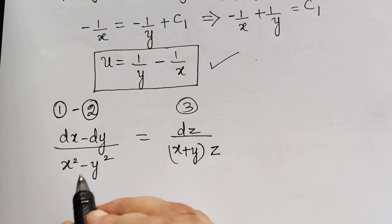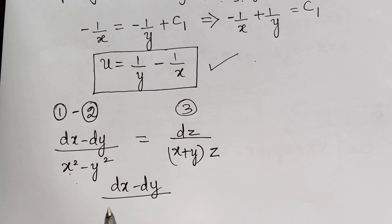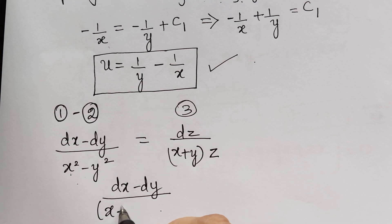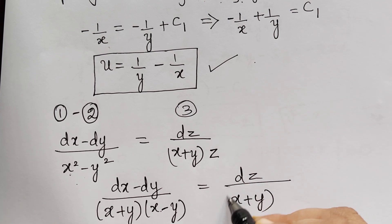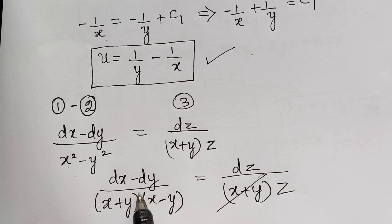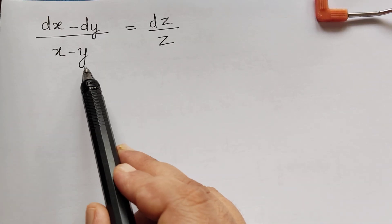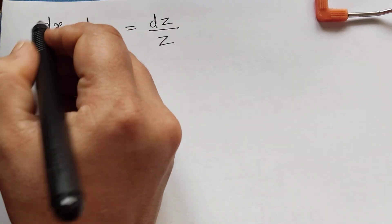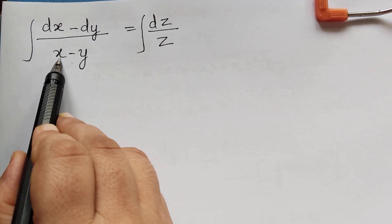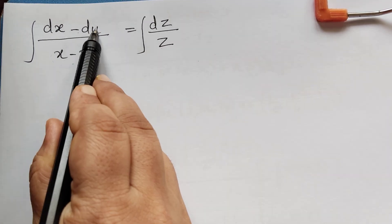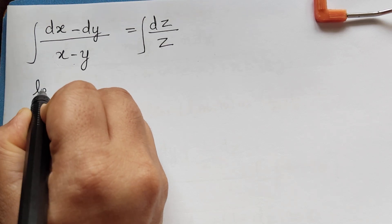We can rewrite the denominator using the formula a squared minus b squared equals a plus b times a minus b. So x squared minus y squared becomes x plus y times x minus y. We observe that x plus y on the left and x plus y on the right can be cancelled. After cancelling, we get dx minus dy over x minus y equals dz over z. Integrating both sides, since the differentiation of the denominator equals the numerator, the integral is the logarithm of the denominator.